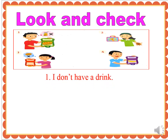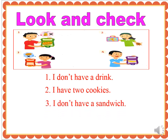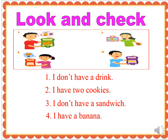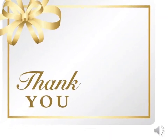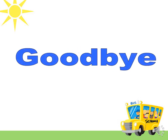Number one: I don't have a ring. Number two: I have two cookies. Number three: I don't have a sandwich. Number four: I have a banana. Good job! Do the exercise at home. Thank you for listening. Goodbye!